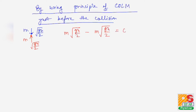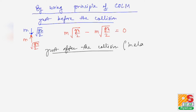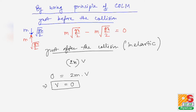The total linear momentum just before collision is m·√(gh/2) − m·√(gh/2) = 0. Just after the inelastic collision, the two bodies move together with total mass 2m and velocity v. By conservation of momentum, the initial momentum equals the final momentum, so 2m·v = 0, giving v = 0.